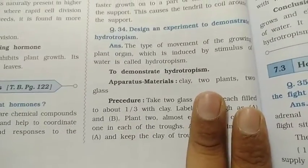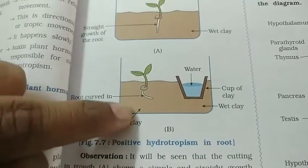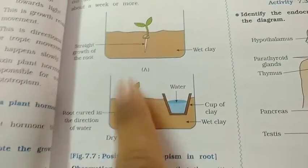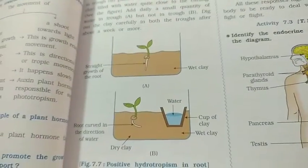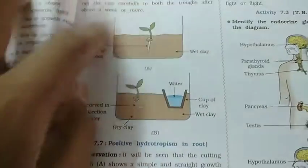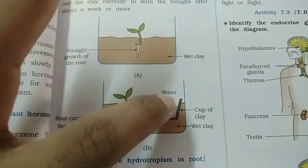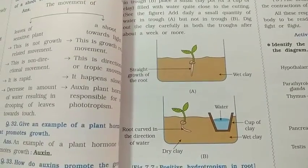Design an experiment to demonstrate hydrotropism. You have two different setups. In one figure, there is straight growth of the roots — this shows straight growth when water is uniformly available. In another, the roots curve in the direction of the water source. One side has wet clay with water available, the other side is dry. On the side with the water source, wet clay is present. The plant's root growth will be in the direction of the water.